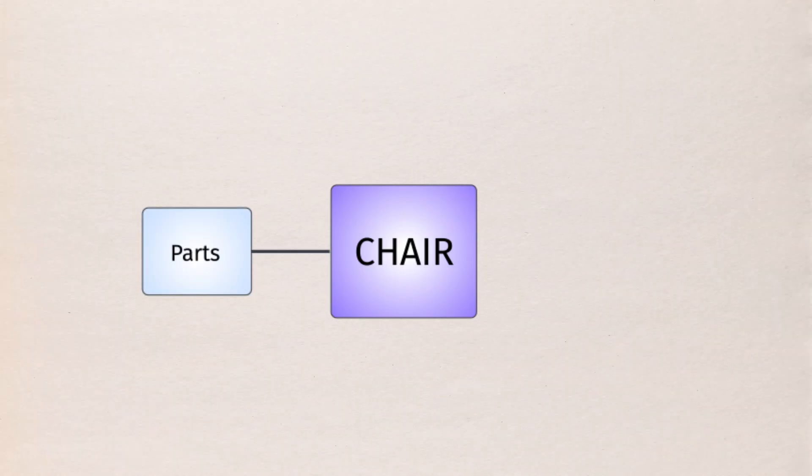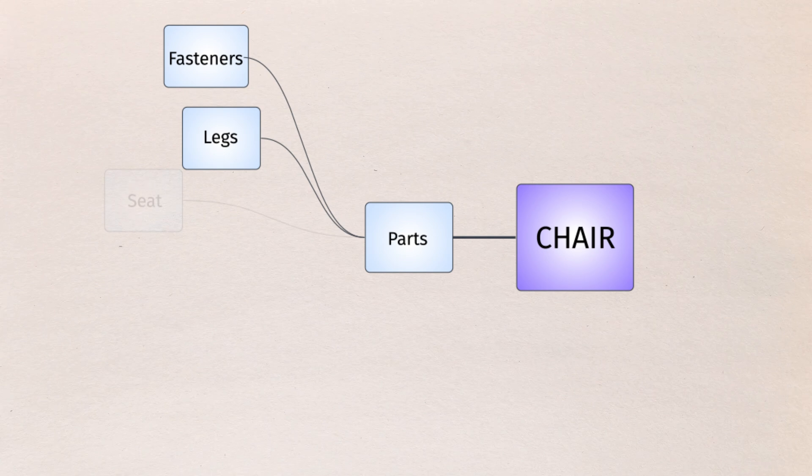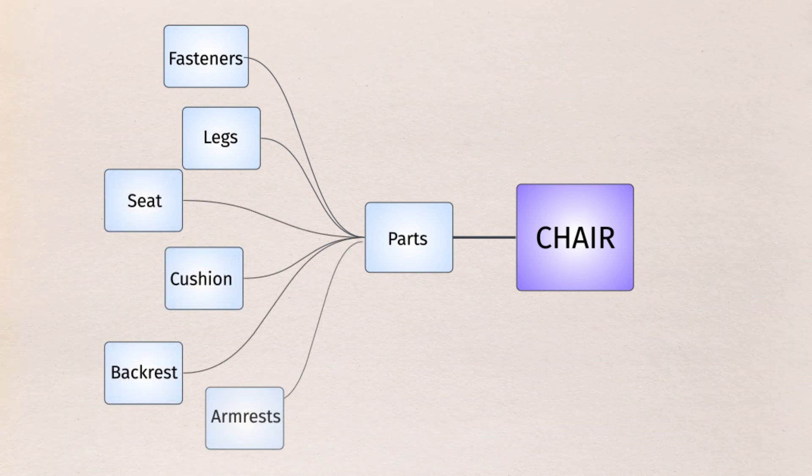Mind maps could take several forms. We can start by listing the different parts of the chair, such as fasteners, legs, seat, cushion, backrest, and armrests.